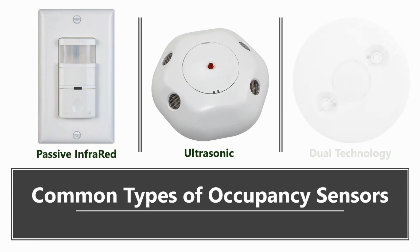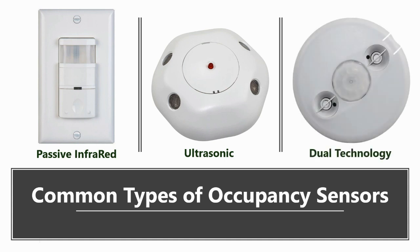The third type is a combination of both, or dual technology. Dual tech sensors utilize two detection methods to increase reliability in applications where a higher degree of detection is desirable, such as classrooms. Most manufacturers offer sensors that combine ultrasonic and passive infrared technologies. They activate only when both technologies detect the presence of people, but only one technology is needed to hold them on.